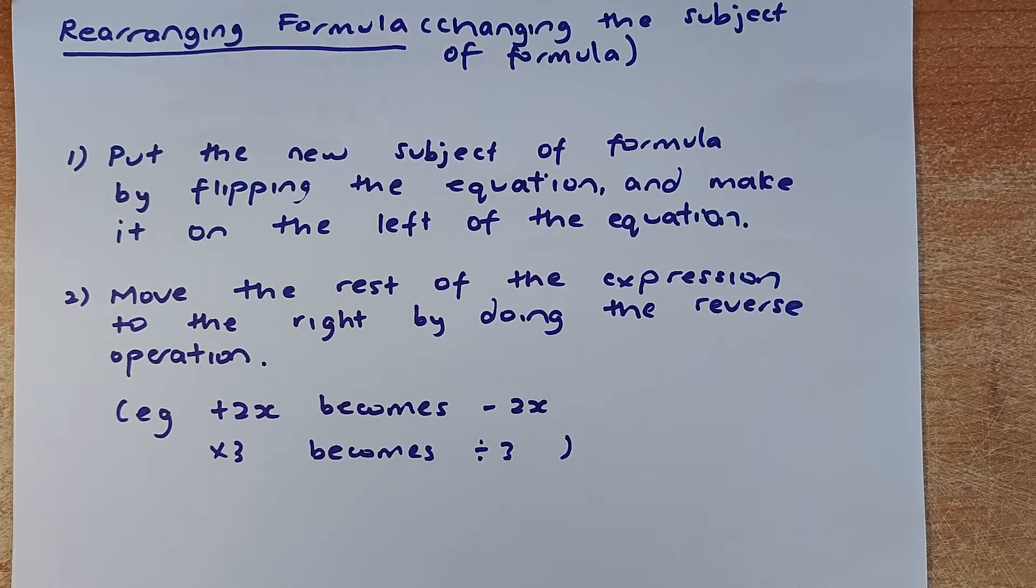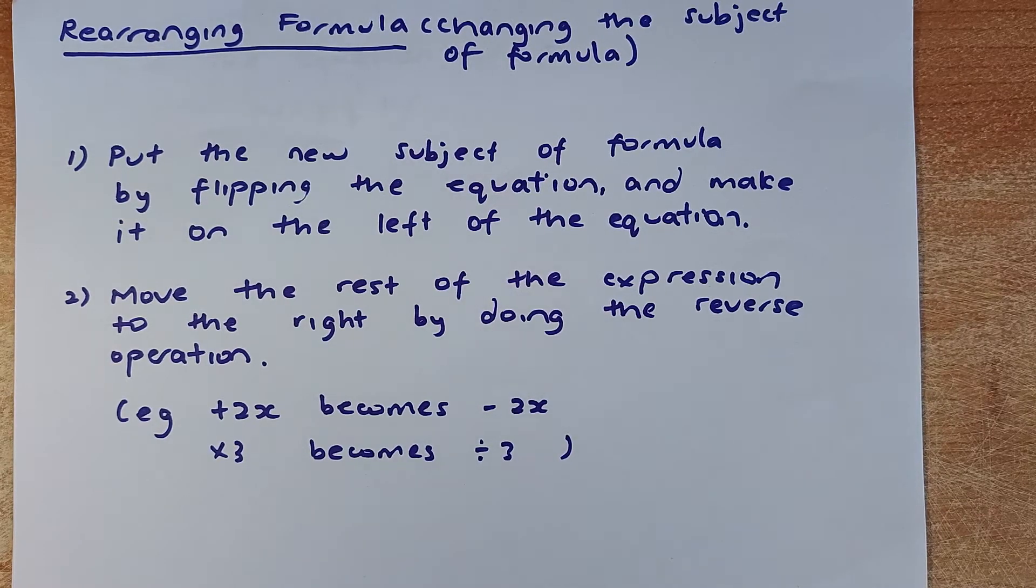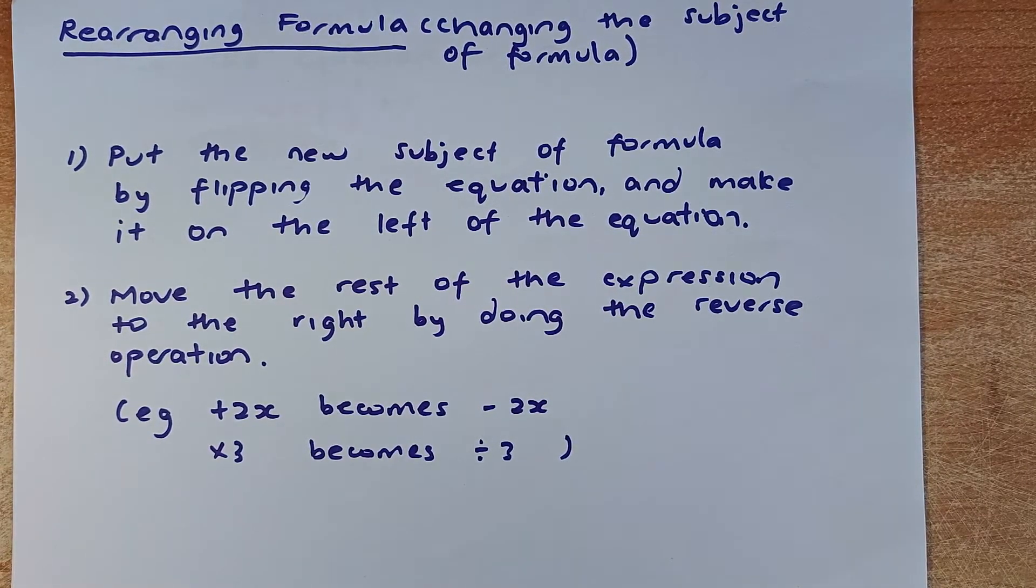So the idea of rearranging formula is simple. You are going to put the new subject of formula on the left. You have to do that by flipping the equation. And then you are going to move the rest of the equation to the right. You do that by doing the reverse. If it is plus 3x, you minus 3x. If it is times 3, you divide by 3.